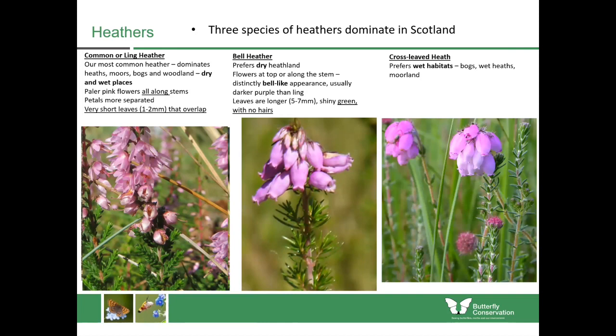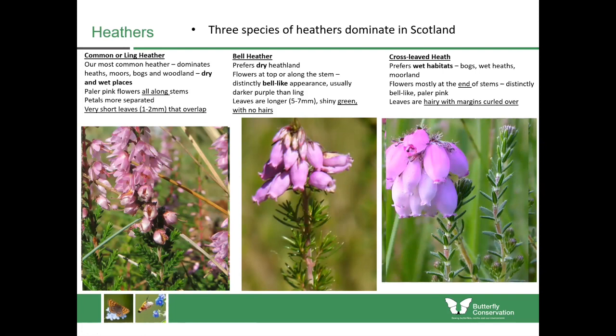The final species is cross-leaved heath, which prefers wetter habitats including bogs, wet heaths and moorland. The flowers are only at the very ends of the stems — gathered at the end, distinctly bell-like and urn-shaped, very similar to bell heather but a paler pink. The leaves are hairy with margins curled over, which is very distinctive compared to bell heather. These three species are all very good nectar sources for insects but are also used by caterpillars of various moth species including the emperor moth.